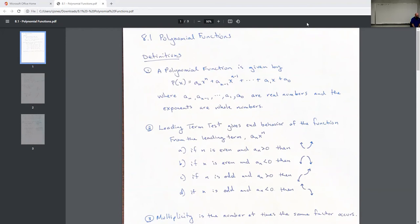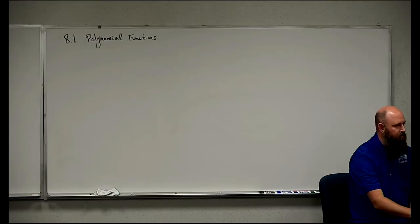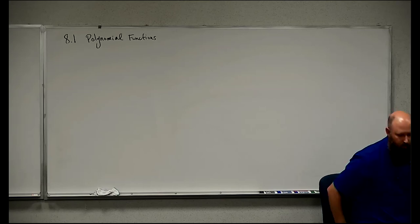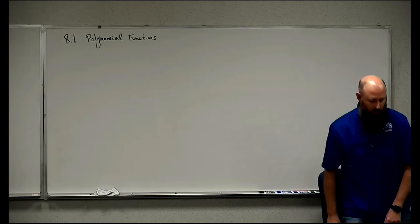Our third definition is multiplicity — the number of times the same factor occurs. So if we have technically the same answer repeated, that's the multiplicity. Let's look at our examples and work through these things.